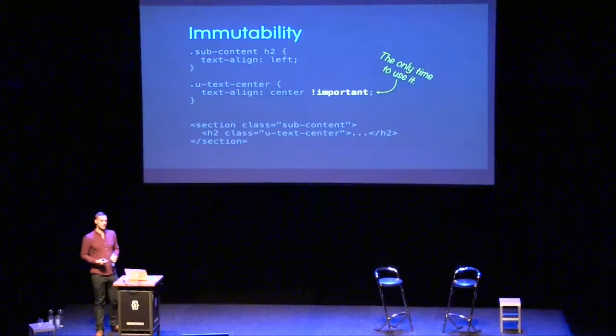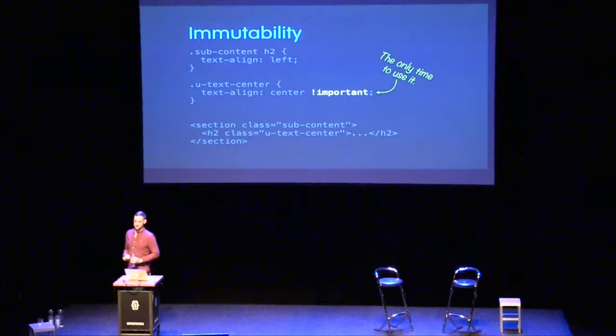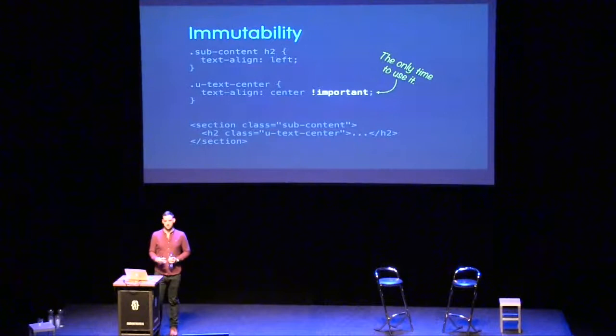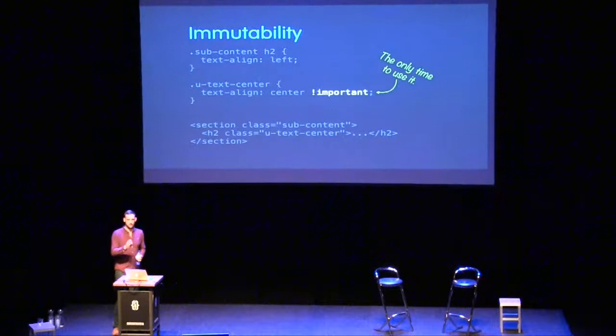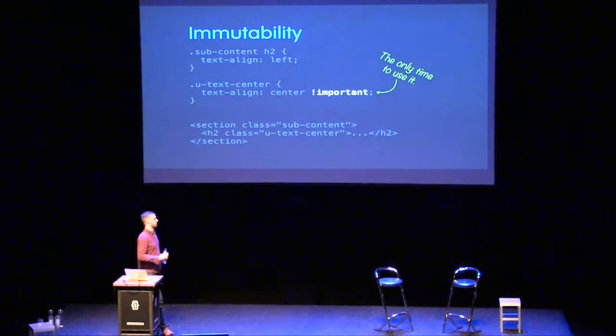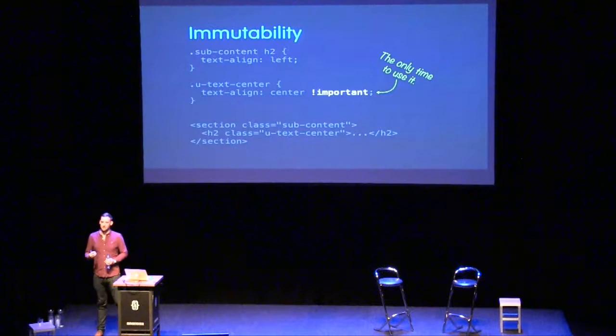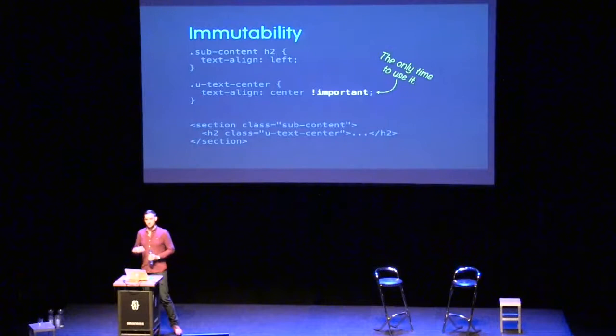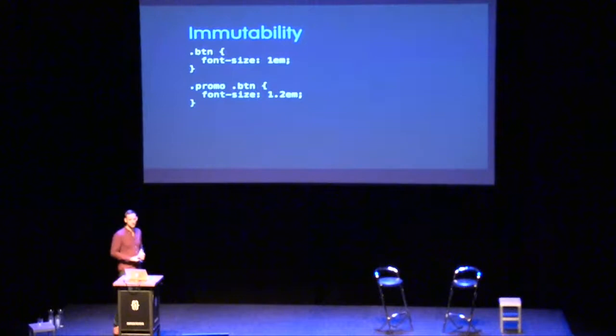This is fixable — stick an `!important` on there. Never use `!important` in anger; use it proactively. The only place I ever want to see `!important` in a stylesheet is on utility or helper classes — this is to force immutability. There is absolutely zero chance we would use a class of `text-center` and want the thing to not be centered. In utility classes, using `!important` is not just acceptable, it's advisable.